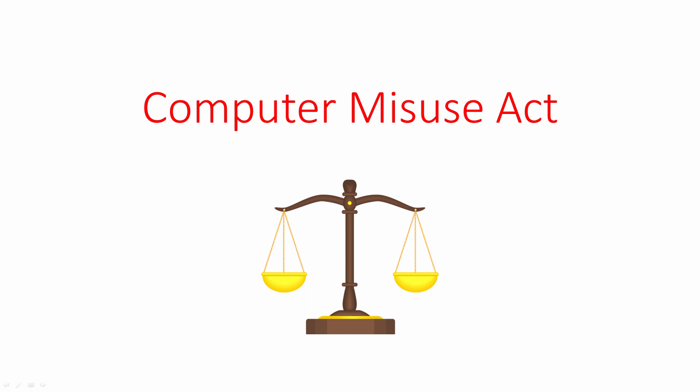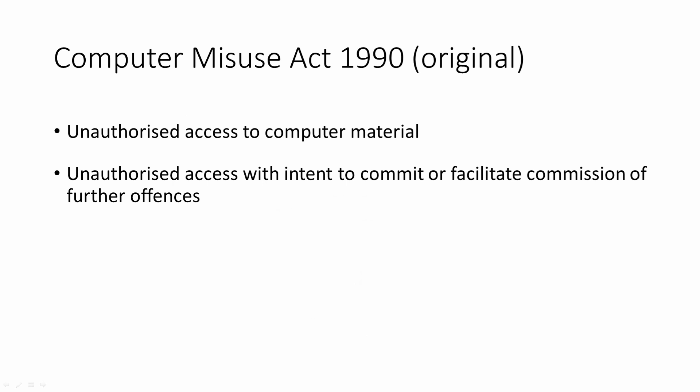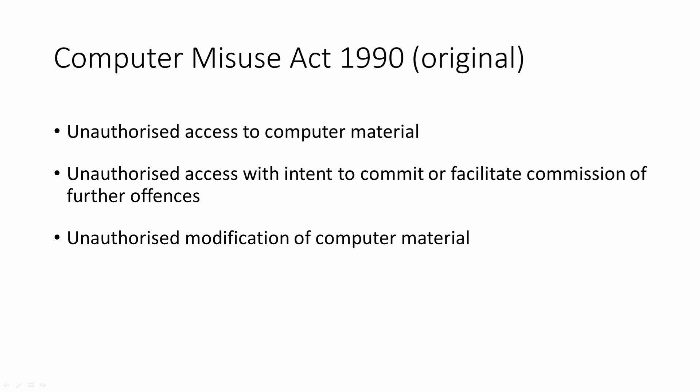The original Computer Misuse Act became British law in 1990. It included three specific offences. But it has been more than 30 years since the law was enacted, and in this time, society's use of the internet and an increasing threat from cybercriminals means that it has been updated more than once.